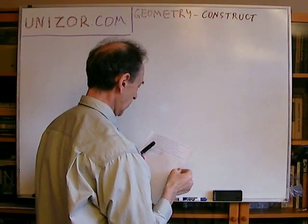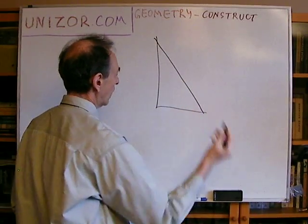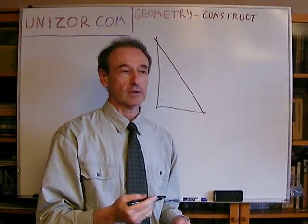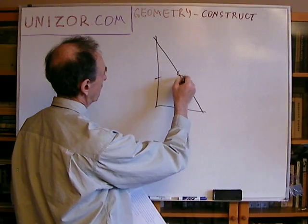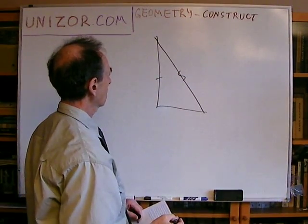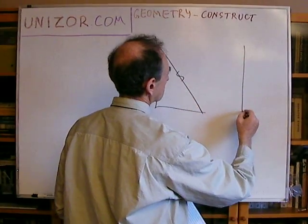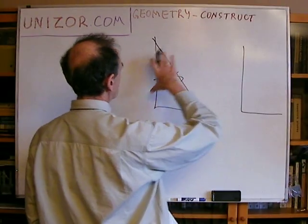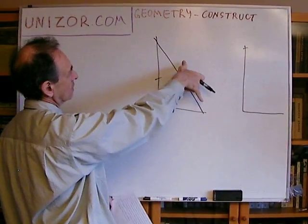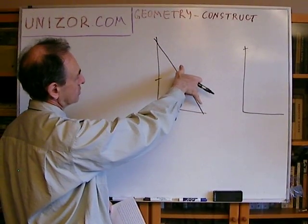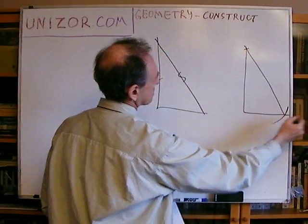Construct the right triangle by one of its legs — a cathetus — and a hypotenuse. So now we have these two elements. Usually two elements are sufficient for a right triangle, whereas three elements are needed for a general triangle. We have one leg and the hypotenuse. Again, you start with the right angle, use the compass to measure the leg and mark the point. Then, with the compass set to the hypotenuse, you mark a circle centered at that point, and wherever it crosses the other line — that's our triangle.